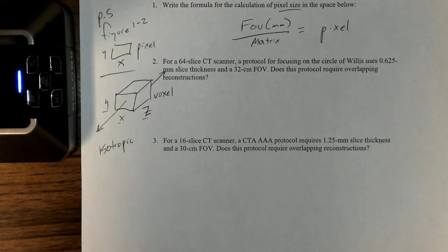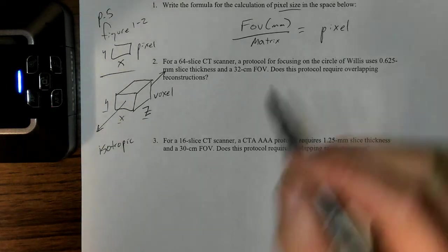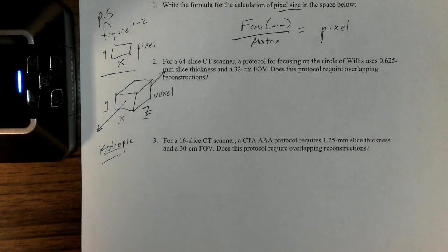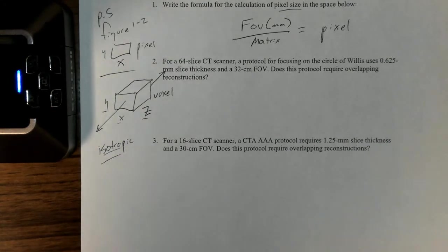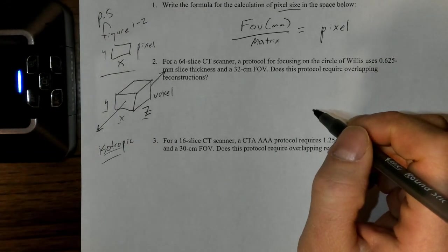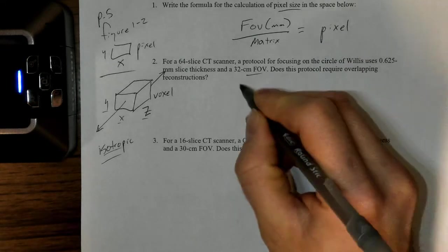This first problem: 64-slice CT scanner, that's good, that's a fairly new CT scanner. Protocol for focusing on the circle of Willis, so we're looking at something very tiny and we need the contrast to be perfusing through it very rapidly. We're going to have a very small imaging window for this. We're going to use very small slice thickness, so 0.625-millimeter slice thickness, which is one of the smallest thicknesses we could have, in a 32-centimeter field of view. Does this protocol require overlapping reconstructions? The question is are we going to have isotropic voxels that result from this, or are we going to have non-isotropic voxels that will require some kind of overlap in post-processing?